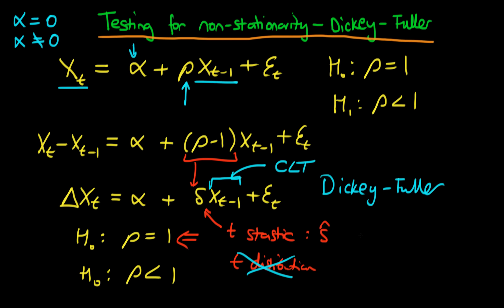We can actually just compare our ordinary t-statistic with the values of this Dickey-Fuller distribution. It turns out that if the t is less than some critical value from the Dickey-Fuller distribution, then only in those circumstances do we reject the null hypothesis.